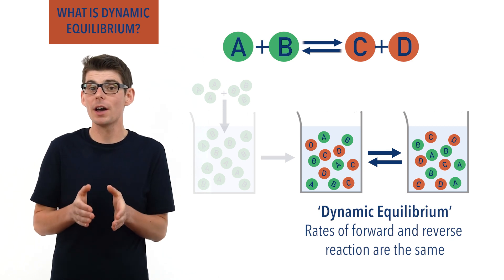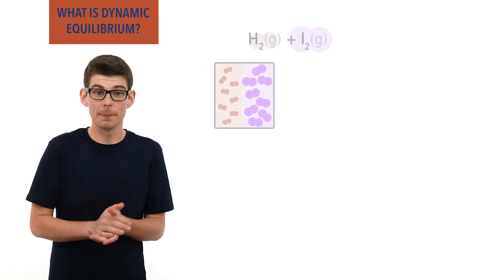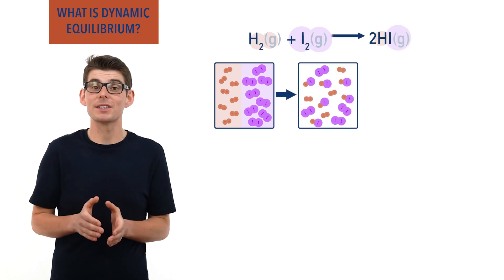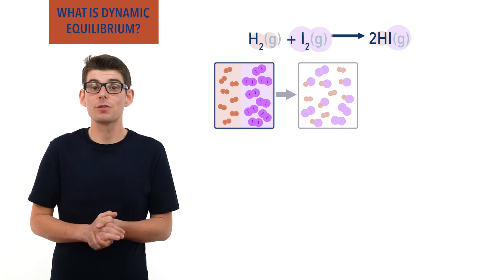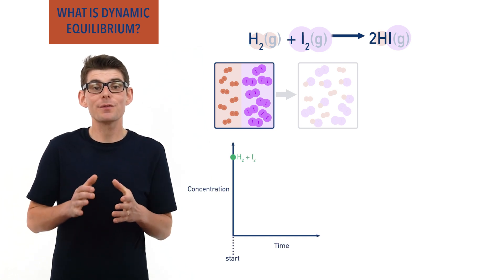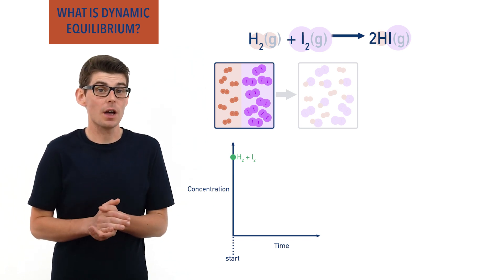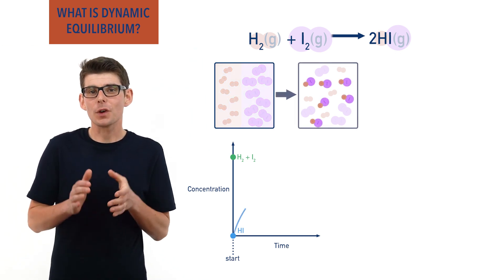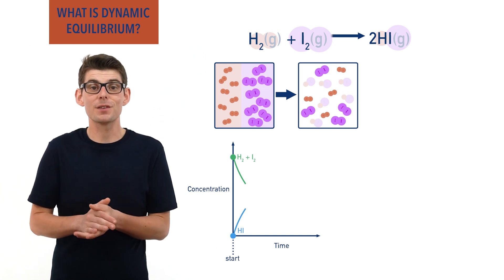Let's think about hydrogen and iodine again. If we mixed some hydrogen and iodine gas together in a sealed container, they would start to react and form hydrogen iodide. The sealed container makes the system closed — no particles can get in or out. At the start, there will be lots of hydrogen and iodine molecules, meaning a high concentration of both. They will collide together frequently and the rate of the forward reaction will be high. As a result, hydrogen iodide will be produced very quickly and its concentration will start to increase, while the concentrations of hydrogen and iodine will start to decrease, slowing down the rate of the forward reaction.